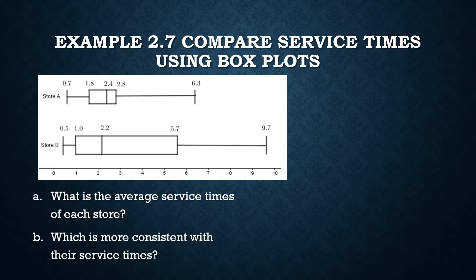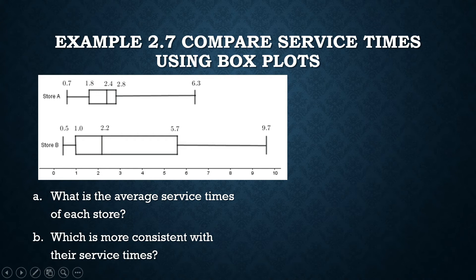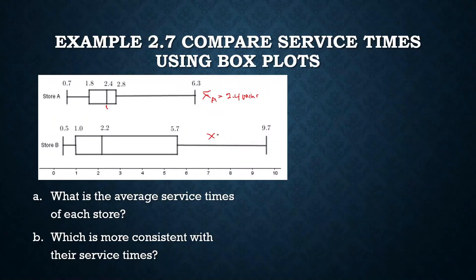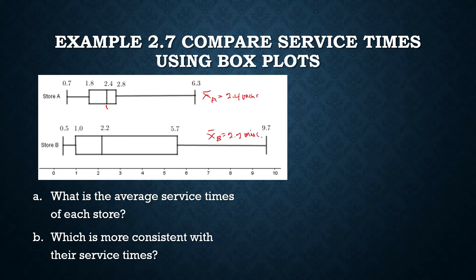The average service time is a measure of central tendency. On average, after collecting so many data, the service times of store A can be found from the median. Let's call it X bar sub A is equal to 2.4 minutes. By comparing these service times, we can tell with some grain of carefulness, because the difference is small, that the average service time in store B is faster than in store A.